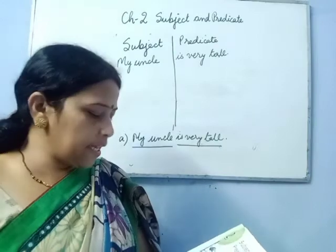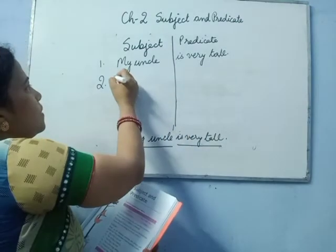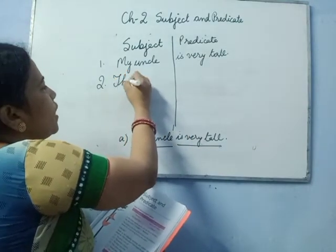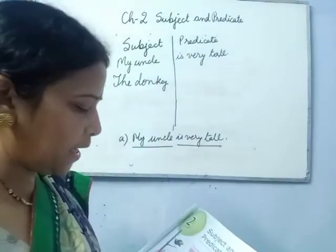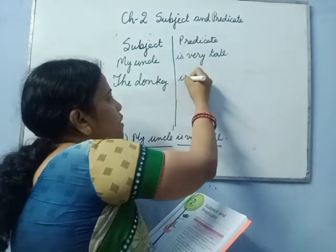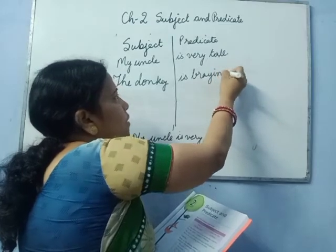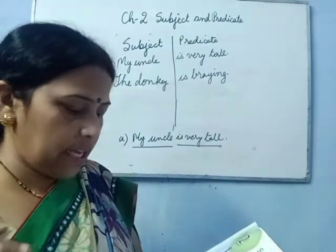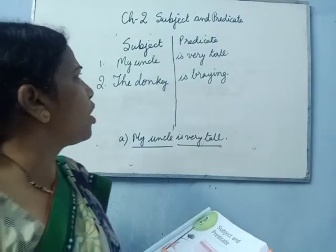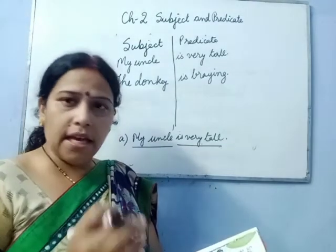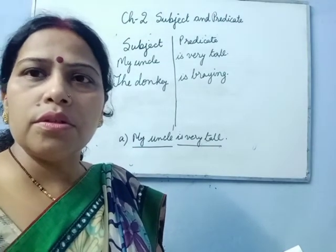For the second sentence, 'The donkey is braying': we are talking about the donkey, so 'the donkey' is the subject. What action is it doing? It is braying, so 'is braying' is the predicate. The remaining sentences C, D, E, and F you have to do yourself in the same way. Make columns for subject and predicate. Thank you everyone.